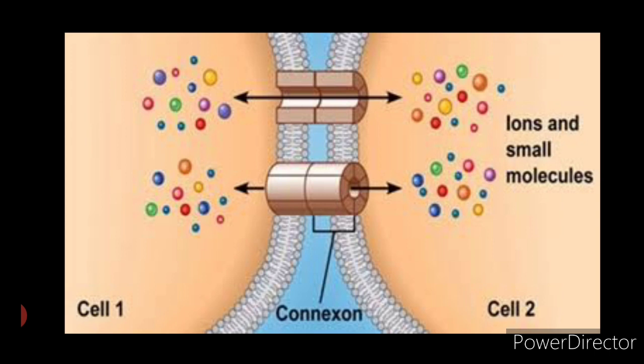Ions in high concentration outside the cell, such as calcium ions, flow into the damaged cell and shut its gap junction channels. This isolates the cell and prevents the damage from spreading to other cells.